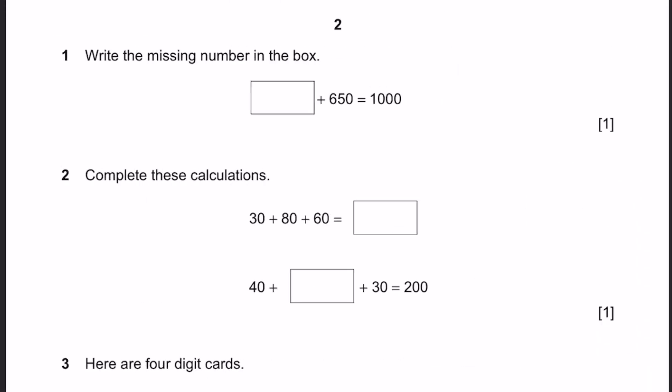Question 1. Write the missing number in the box, dash plus 650 is 1000. So if you bring 650 to the other side, 1000 minus 650 is 350. That's the answer.